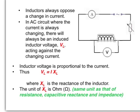Inductors always oppose a changing current. In AC circuits like this one here, where the current is always changing due to the AC supply, there will always be an induced inductor voltage, VL, across the inductor acting against the changing current.